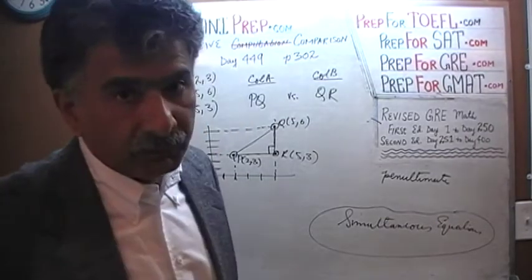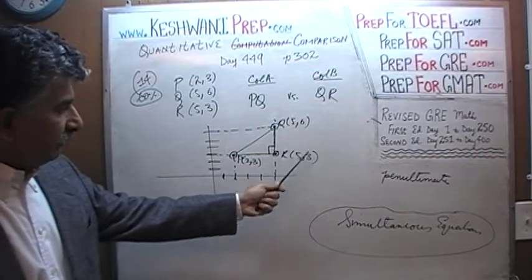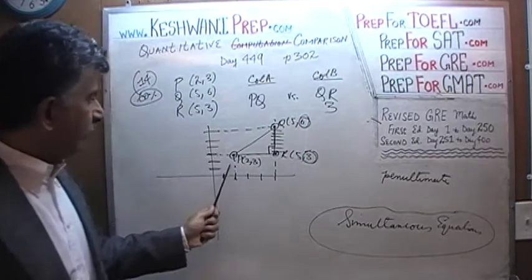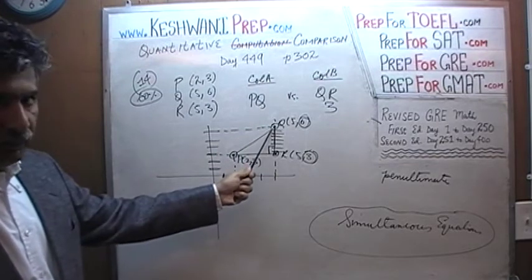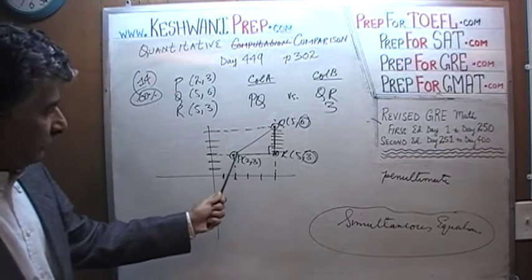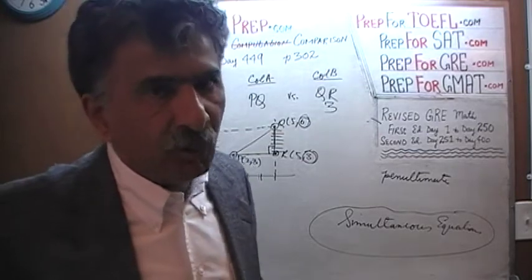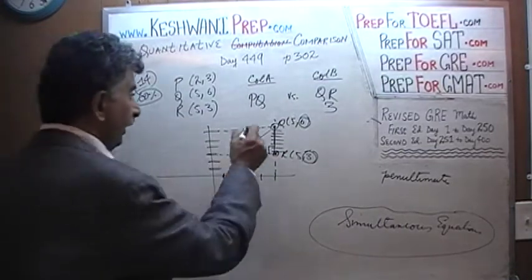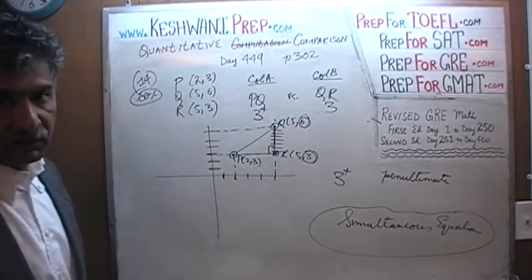I am just going to finish up very quickly. We know the distance from Q to R — from y-coordinate 6 down to 3 — so the distance QR is 3. As for PQ, we have to realize that the side PQ faces the right angle. Since PQ faces the right angle, it is the hypotenuse, and the hypotenuse is always the longest side. So whatever PQ is, it must be more than 3. Therefore, the answer is A.